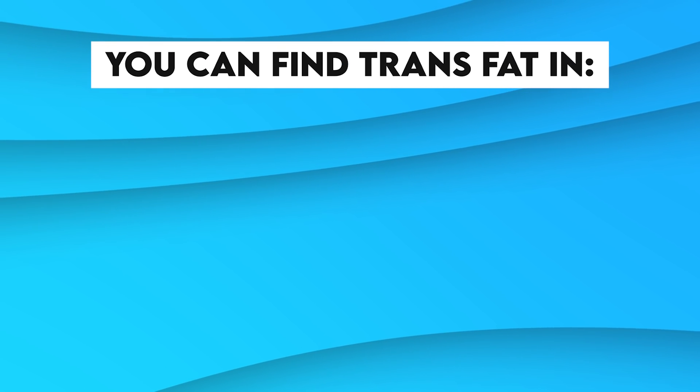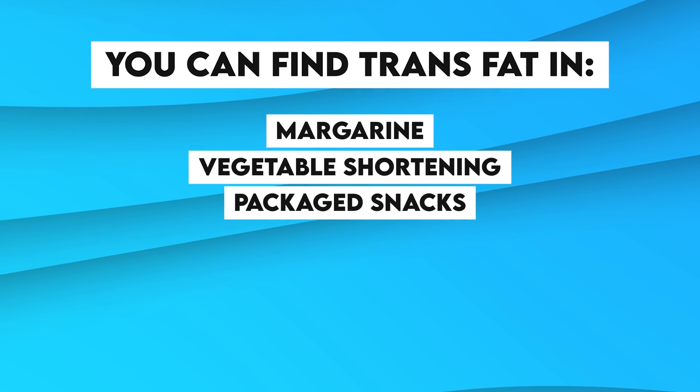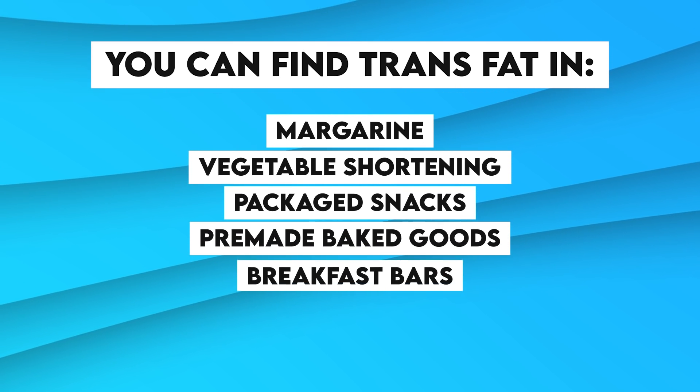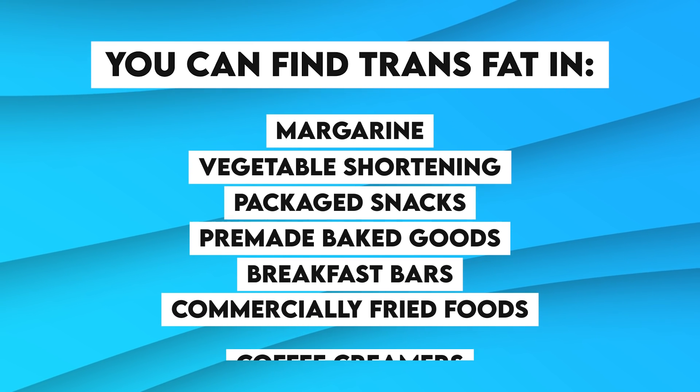Where do you find these sources? You can find trans fats in things like margarine, vegetable shortening, packaged snacks, pre-made baked goods, breakfast bars, commercially fried foods, and coffee creamers. I say commercially fried foods because not all frying is bad — it depends on the oil that's used. Safflower oil is an unsaturated oil with a high smoke point. The smoke point is the temperature at which the oil, when heated, starts to smoke and break down, producing free radicals. Free radicals cause cell damage through oxidation — I call oxidation your body's rusting process. So if you don't know what kind of oil was used to fry the food, it's best to stay away from it.